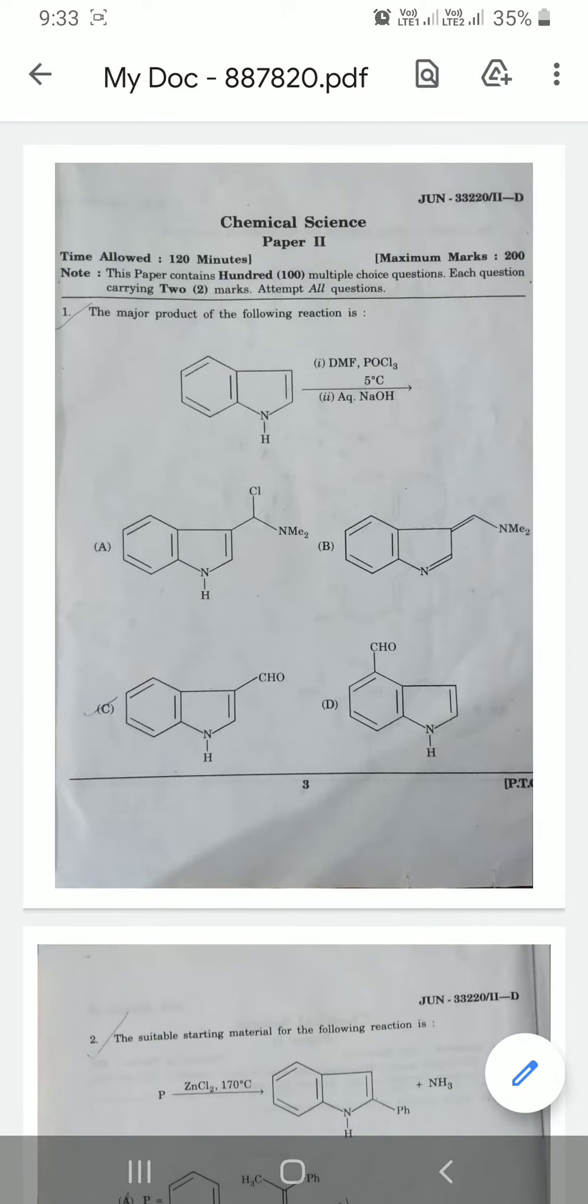Namaskar. We are discussing the 27 December 2020 Maharashtra State Chemical Science Paper 2. Question 1: Major product of the following reaction - reaction of indole with DMF POCL3 at 5 degrees Celsius followed by aqueous NaOH. DMF POCL3 is Vilsmeier-Haack reaction, which gives formylation. Indole electrophilic substitution occurs at the third position. The correct option for this question is option C.